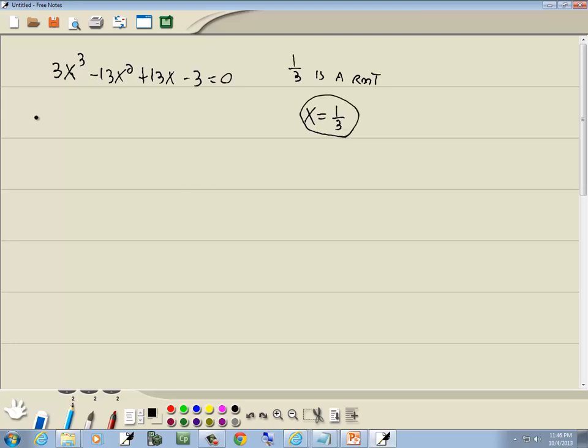Well, we want to take that and plug it into synthetic division. I'll take that 1/3, put it in a box in the upper left hand corner. Our largest power is x to the third, so I'm going to write x to the third, x squared, x, and no x across the top. Now the number in front of our x to the third is 3. The number in front of our x squared is negative 13. The x is 13. And the no x, the constant term, is negative 3.